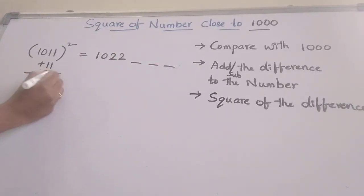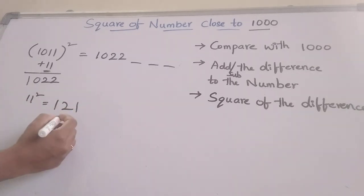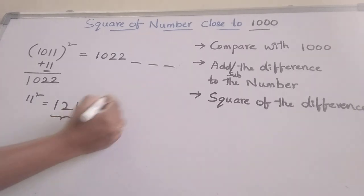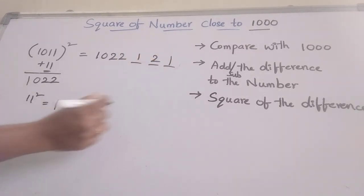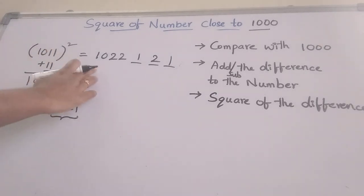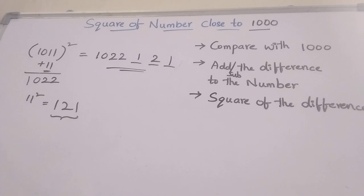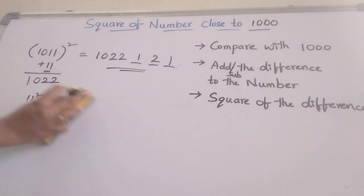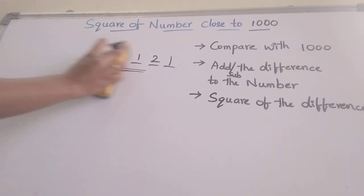What is the square of 11? 11 squared is 121. We can directly write this number here: 1, 2, 1. What is the answer for 1011 squared? This is the answer. Next, let's move to one more example.